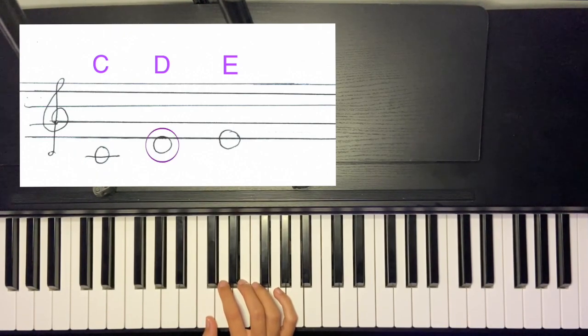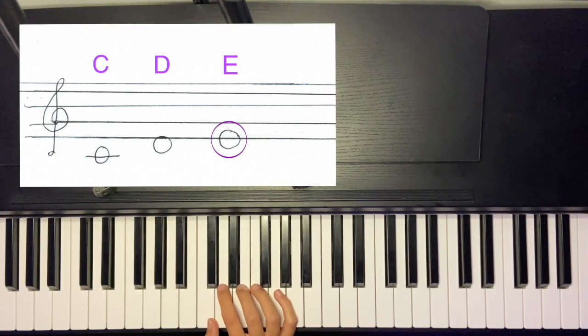Then we've got D, which is slightly higher than C and it's slightly touching the first line of the five lines. And then we have E, which is on the first line of the five lines.